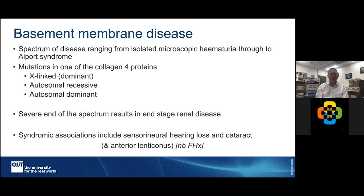The basement membrane diseases are due to mutations in collagen 4 and represent a spectrum of disease. Mild mutations lead to isolated microscopic haematuria — red blood cells escaping through the glomerular filtration membrane. If you have a patient who is otherwise well with persistent microscopic haematuria, a basement membrane disease such as Alport syndrome may be worth considering.